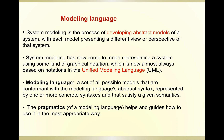I'm going to show you two examples of state diagrams. Regarding modeling language: system modeling is defined as the process of developing abstract models of a system, where each model presents a different view or perspective of the system. System modeling has come to mean representing a system using graphical notations, which are now almost always based on the Unified Modeling Language — UML. A modeling language is essentially a set of all possible models that are complementary with the modeling language, with abstract syntax represented by one or more concrete syntaxes satisfying a given semantics.